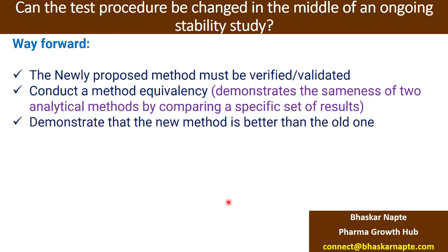However, if your old method is not good — not sensitive, not robust, not accurate — your new method may be better, and that can be a very valid point to support the new method. This is point number three: demonstrate that the new method is better than the old one. In that case, you cannot say the methods are equivalent, because the new method is better than the existing one. You must put forward justifications for why your method is better.